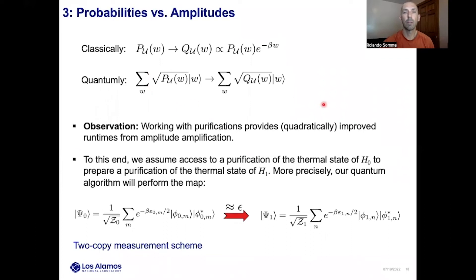The third challenge is a common one for quantum algorithms based on measurements. Rather than transforming one classical distribution into another, we can work with pure quantum states whose amplitudes encode the square root of the probability distributions. Working with these purifications is known to provide quadratic runtime improvements via a well-known technique in quantum algorithms called amplitude amplification. To this end, we assume access to a purification of the thermal state of H0 in order to prepare a purification of the thermal state of H1. These purifications, psi0 and psi1, involve two n-qubits rather than n — hence we call this the two-copy measurement scheme.